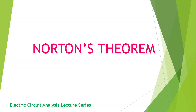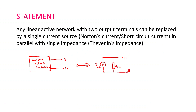Students, in this video we will be discussing about Norton's theorem. Here is the statement of it: any linear active network with two output terminals can be replaced by a single current source in parallel with a single impedance. Here is the pictorial representation of Norton's theorem.